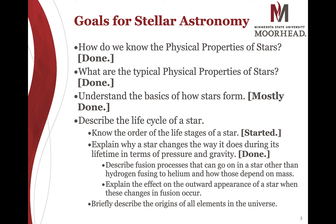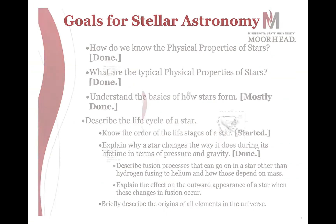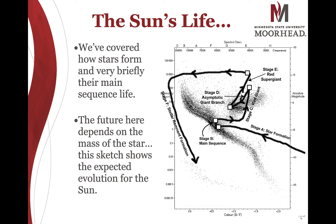We've talked a lot about stars. What we're really looking to finish off today is the evolution of stars and how they change with time. As a reminder, this black path shows where the Sun is at various stages of its life. It starts off in the diagram to the lower right as a cloud of gas. That cloud of gas shrinks and heats up until fusion starts in the core, and that's when the star joins the main sequence.